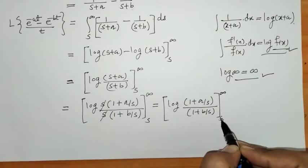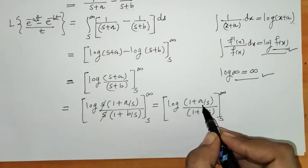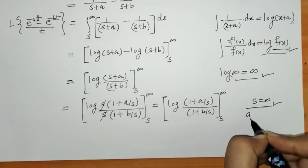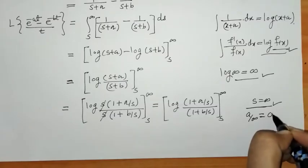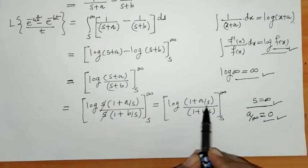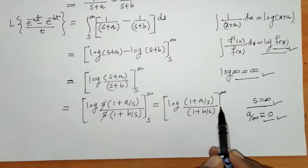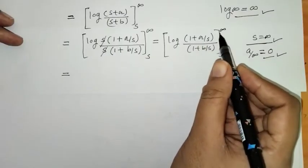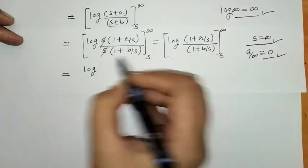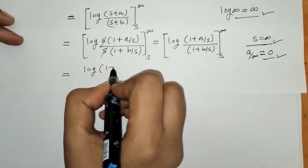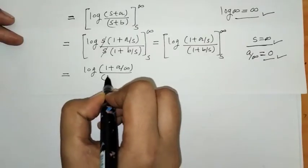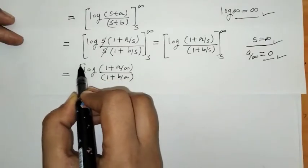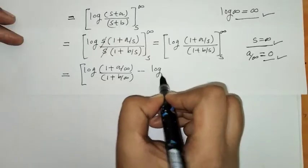Now we can check whether we get a finite Laplace. When s → ∞, the terms a/s and b/s both go to 0 (constant divided by infinity equals 0). So the expression becomes finite. For the upper limit, we put s = ∞; for the lower limit, we leave s as is.